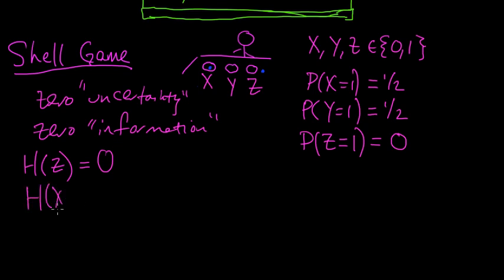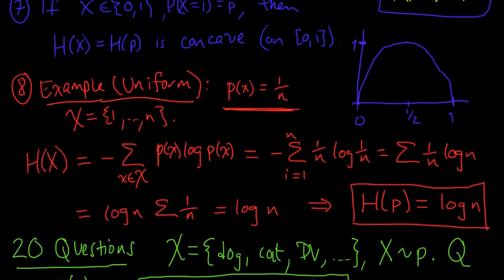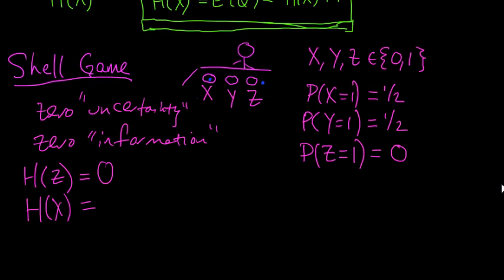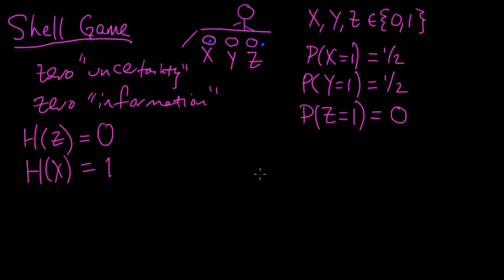And also, the entropy of X is, well, remember X is one with probability one-half. X is also a Bernoulli random variable. And so, looking back at our graph here, we see that the entropy of P, or H of P, when P is one-half is one. So the entropy of X is one. And same thing for Y. Y is one.